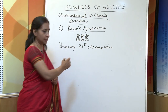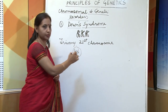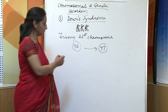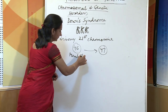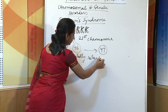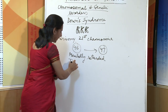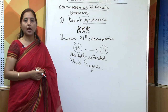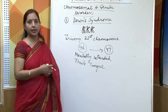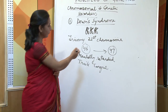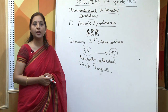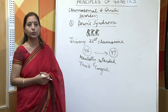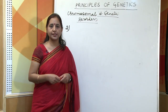As a result, instead of the normal number of 46 chromosomes, the number is increased to 47. Such individuals are mentally retarded and have a thick tongue. Mostly mothers above the age of 40 bear children with Down syndrome, where the number of chromosomes is increased to 47 due to the extra chromosome in the 21st pair.